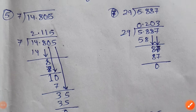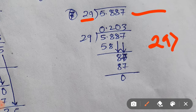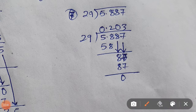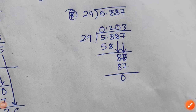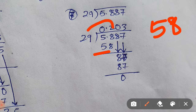Let us try one more question, that is question number 7. We are given 55.887 divided by 29. Now 29 is bigger than 5, so we need to take two numbers together. But if you want to take these two numbers together you have to first take 1 zero and then the decimal point, then take the point up. Now you can try to find a number equal to 58 or less than 58. So 29 times 2 is 58, which is equal to 58. So 58 minus 58 is 0.